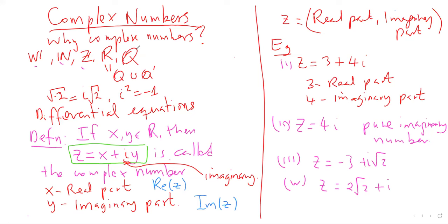So what is a complex number? If x and y are real numbers, then we can write z = x + iy, and this is a complex number. The x component is called the real part, written Re(z), and the y component is called the imaginary part, written Im(z). A complex number consists of two parts: the real part and the imaginary part.